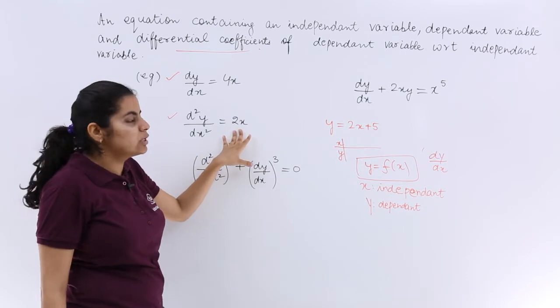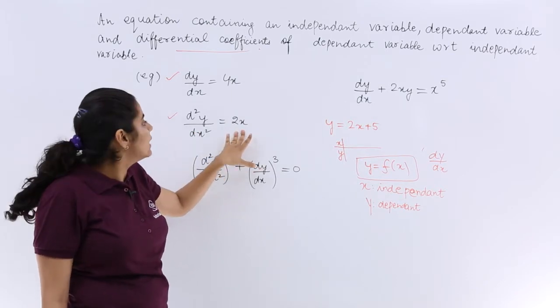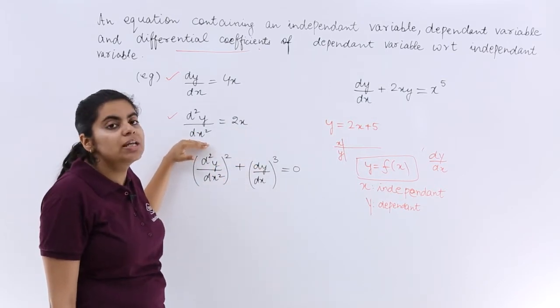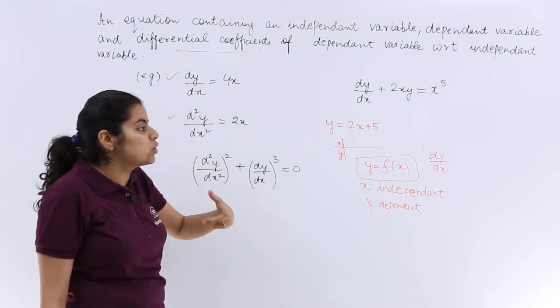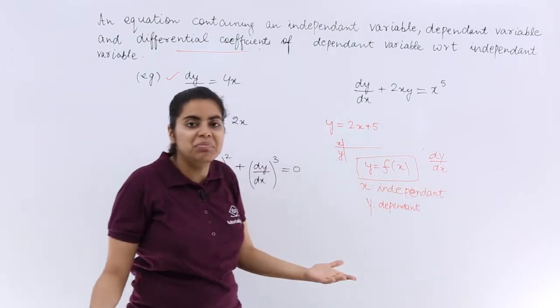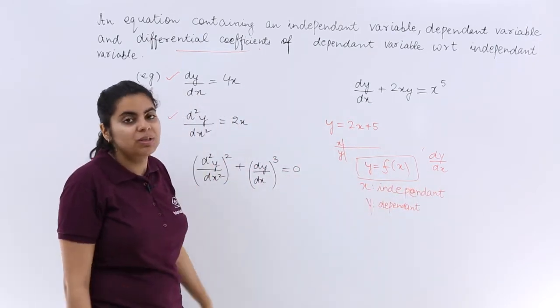Now here, d2y upon dx square equals 2x. Again you see that here there is a differential coefficient. I told you it is not always that dy by dx can be there. Other variations are possible too.